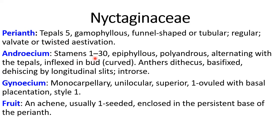Stamens are 1 to 30, differing from species to species, but they are epiphyllous. They are polyandrous — polyandrous means every stamen has its individual filament which is separate from the filament of other stamens right from the base. They are originated separately and attached to the thalamus separately. They are alternating with the tepals, and inflexed in bud — the meaning of inflexed is curved.